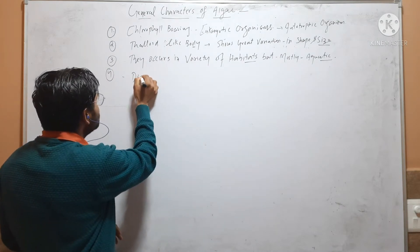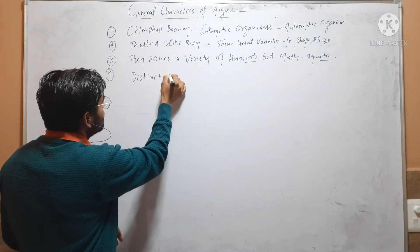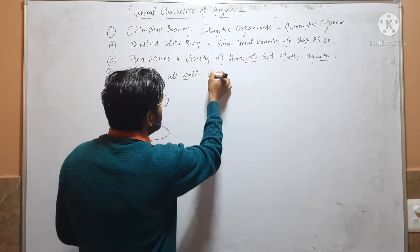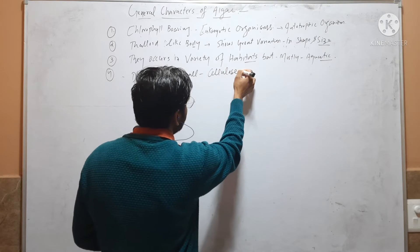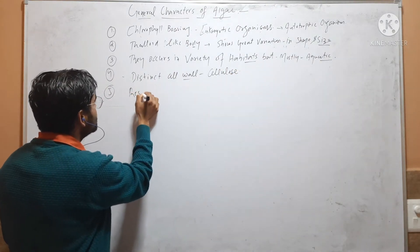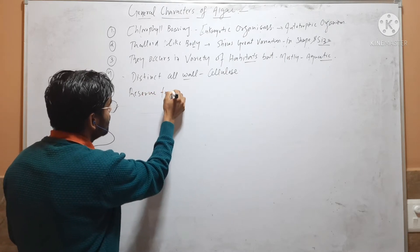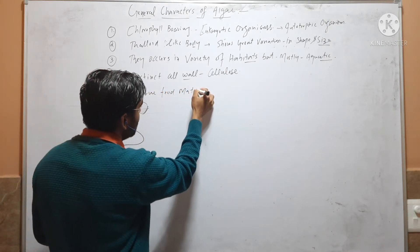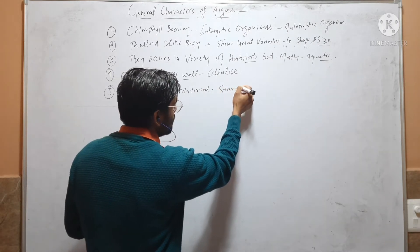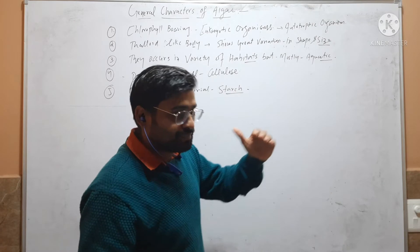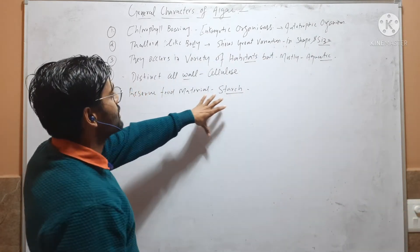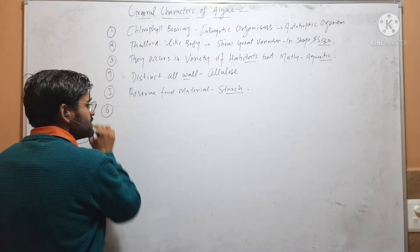Fourth, although they are eukaryotic organisms, algae have a distinct cell wall, and this cell wall is made up of cellulose in most algae. Fifth, the reserve food material in most algae is starch, with a few exceptions.